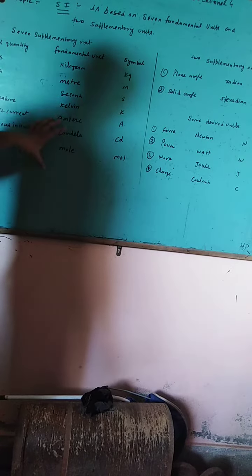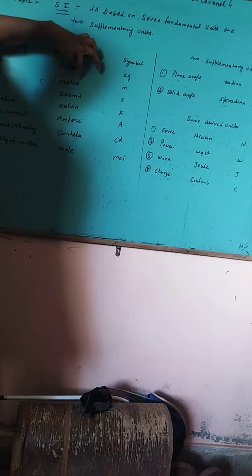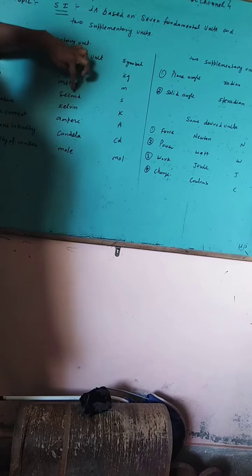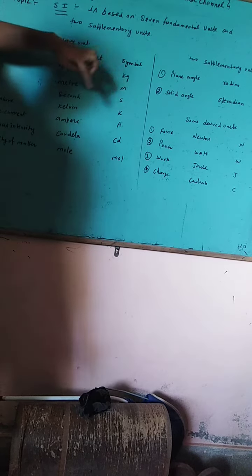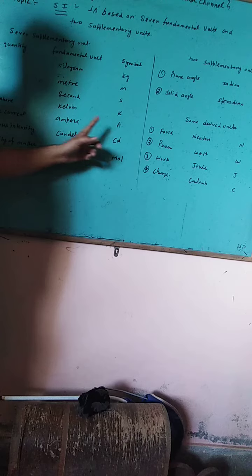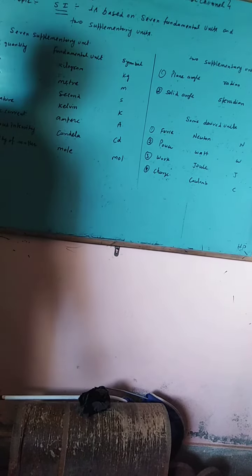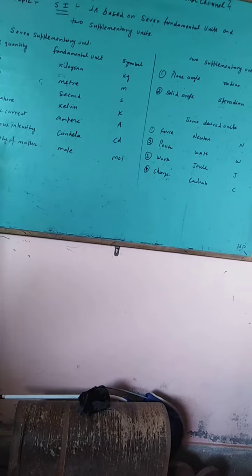The symbols of these fundamental units are: kilogram is Kg, meter is small m, second is small s, Kelvin is capital K, ampere is capital A, candela is cd, and mole is mol. These are the seven fundamental units of the SI system.